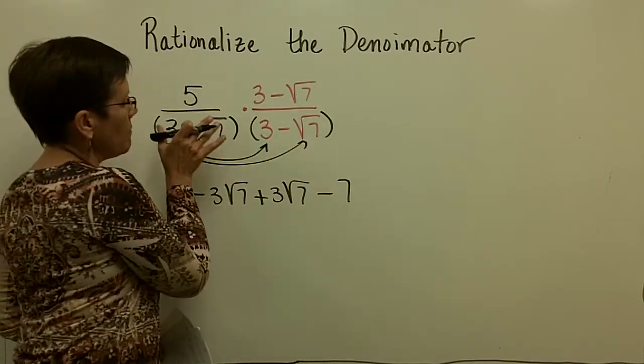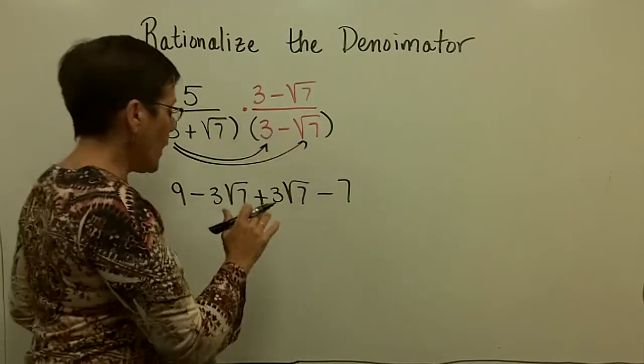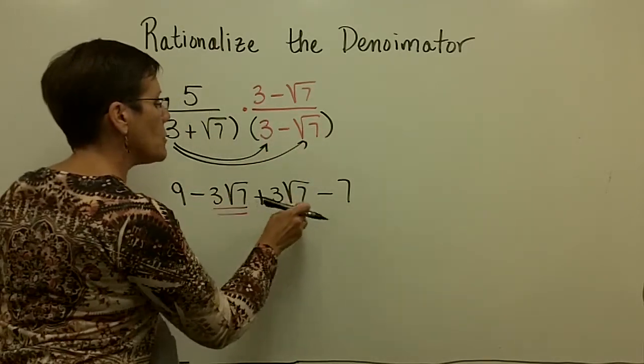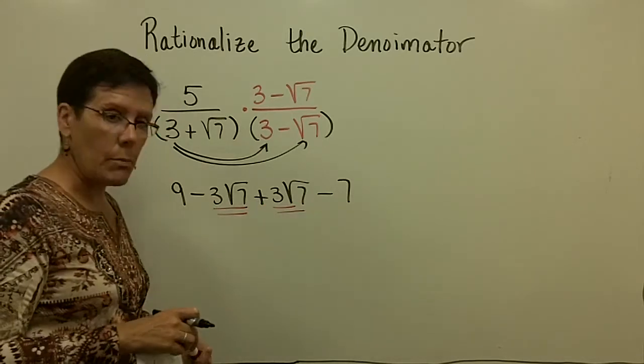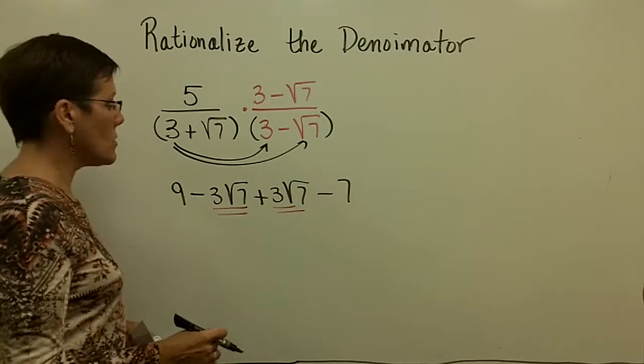When you multiply this binomial by its conjugate, what happens is that its middle terms add to be 0. We've seen one like this already before. This minus 3 square root of 7 plus 3 square root of 7 is 0.